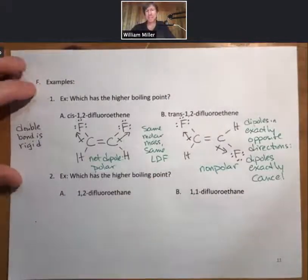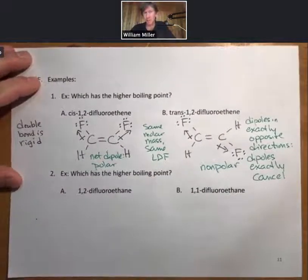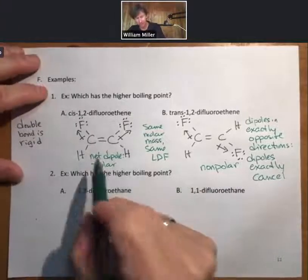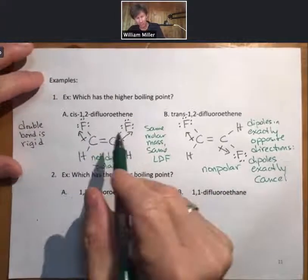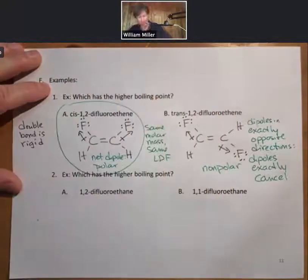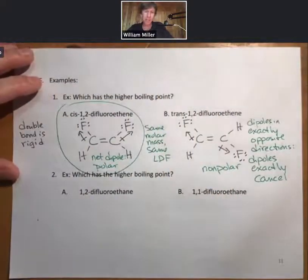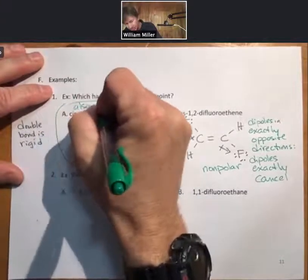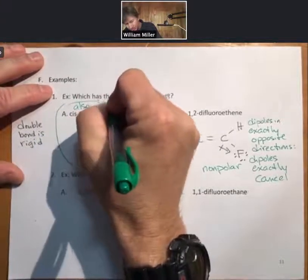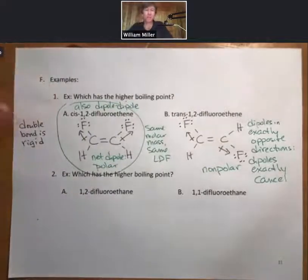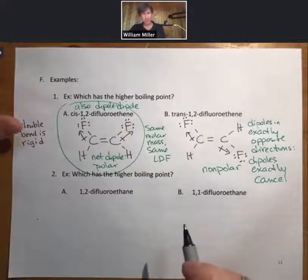Both cis and trans molecules have the same atoms and therefore the same molar masses, giving them the same LDF. The cis molecule is polar, so it also has dipole-dipole forces as its dominant intermolecular force. Therefore the polar cis molecule will have the higher boiling point.